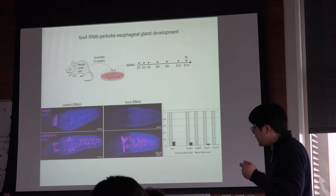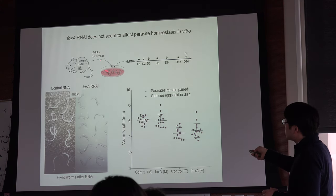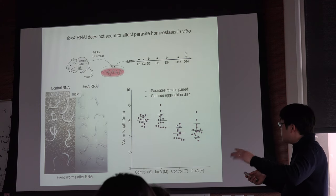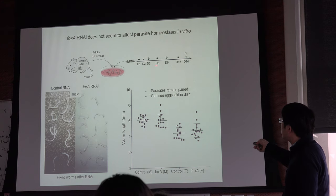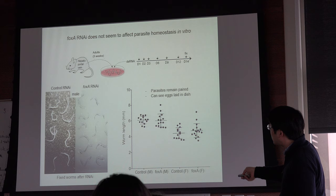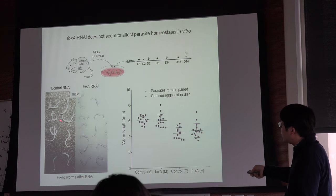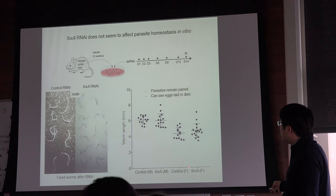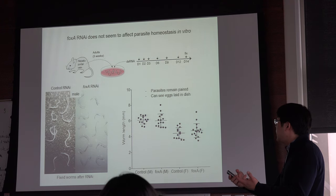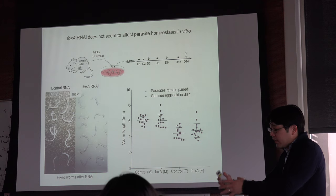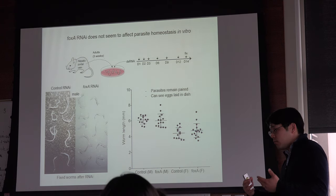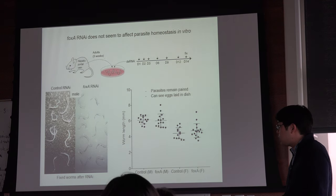What happens to these parasites in the absence of the gland? We can do the same experiment with adult parasites. Taking out adults — about six millimeters long — knocking down this gene and fixing after two weeks. An image of control RNAi versus FOXA RNAi shows no significant difference in body length between male and female versions. Looking under the dish during the knockdown period, the parasites actually remain paired, and you can see all the eggs being laid in the dish, suggesting these parasites are healthy and don't seem to be much affected by the loss of the gland in culture.